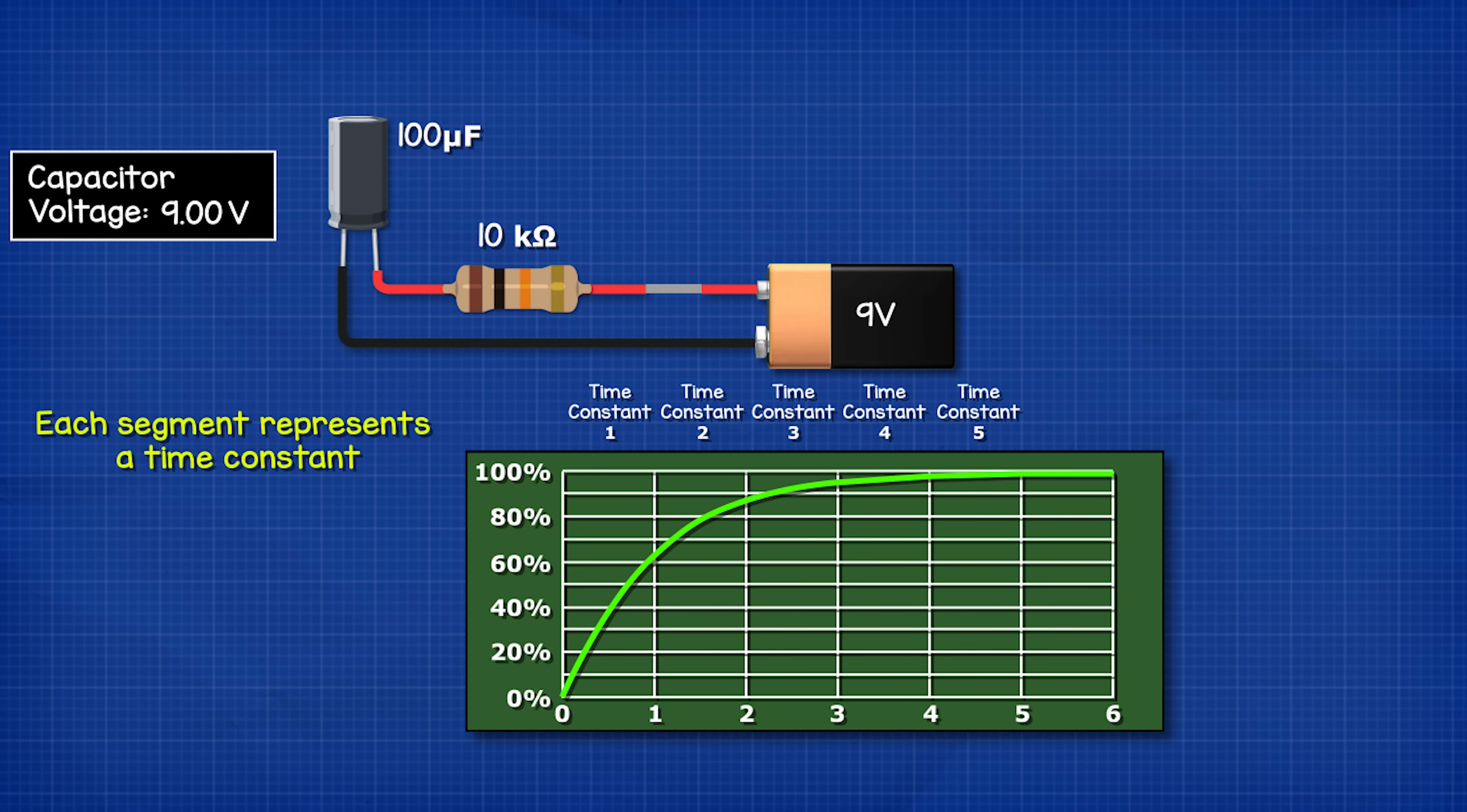Each segment represents something called a time constant. Therefore as we have five segments we have five time constants. So it will take five time constants to charge the capacitor from zero to just under 100 percent.